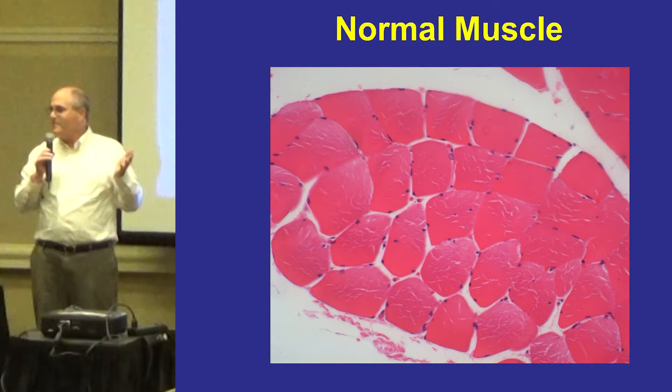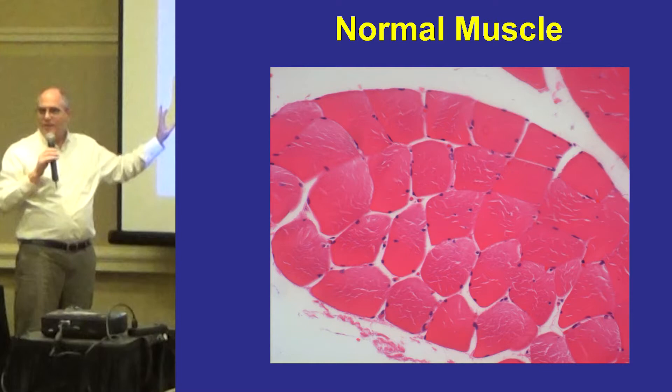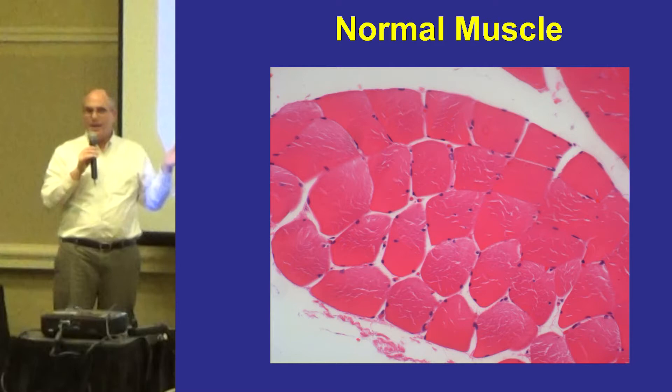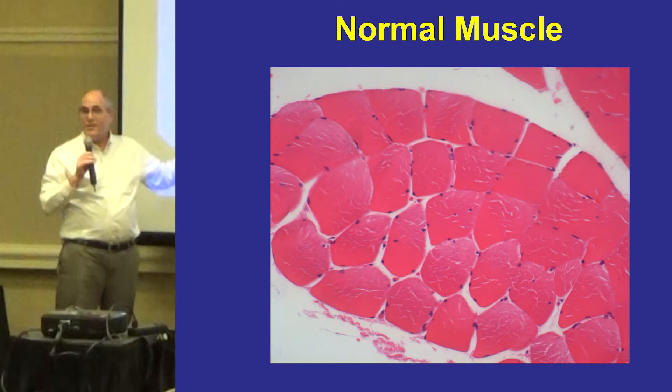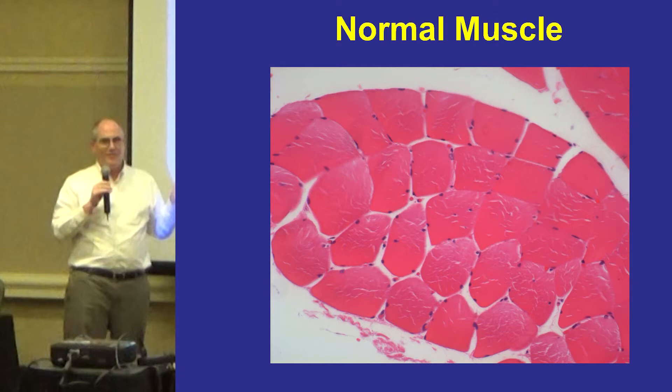Unlike most cells in our body, muscle cells are multi-nucleated, so you see more than one purple dot in each muscle fiber. All these muscle fibers are arranged in a structure called a fascicle — a single fascicle includes around 30 or 40 muscle fibers, sometimes more. This is normal, healthy-looking muscle. You can see that all fibers are about the same size and shape, there are no inflammatory cells, no dying muscle cells, and the muscle cells have no vacuoles or holes in them.